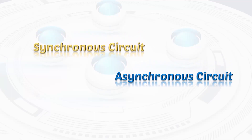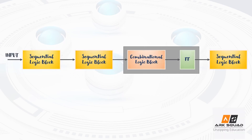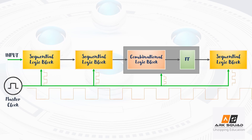Today we are going to see about synchronous and asynchronous circuits. First we will see about synchronous circuits. In a synchronous circuit, all the logic blocks and internal circuits are connected using a master clock. This master clock is responsible for the entire operation of the circuit. The circuit will be active only during the presence of a clock signal, either a positive or a negative signal.